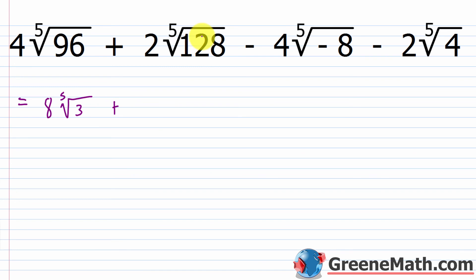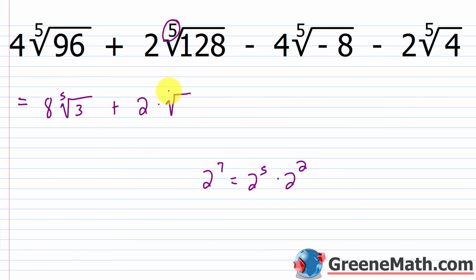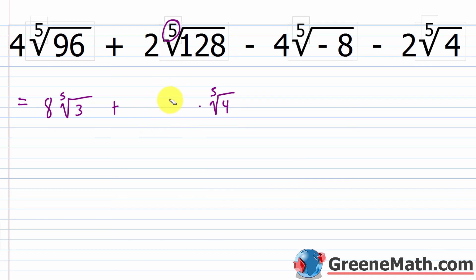Now simplify 2 times the 5th root of 128. We know 128 is 2 to the 7th power. With an index of 5, think of this as 2 to the 5th power times 2 squared, which is 32 times 4. So we have 2 times the 5th root of 32 times the 5th root of 4. The 5th root of 32 is 2, so 2 times 2 is 4, giving 4 times the 5th root of 4.